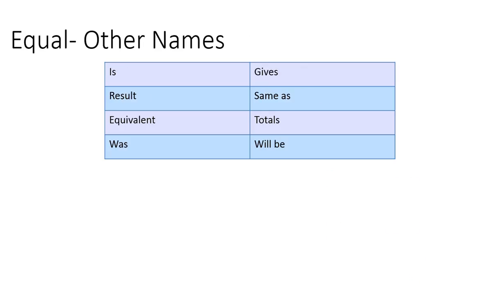Next, we have equal. Some other names for equal are is, result, equivalent, was, gives, same as, totals, will be. So let's look at some examples of those.